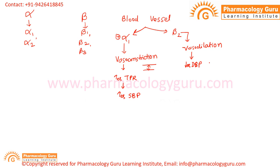So the overall effect in the blood vessel: we have two receptors — alpha 1 and beta 2. When the alpha 1 receptor is activated, it causes vasoconstriction, blood vessels become narrowed, increasing total peripheral resistance and systolic blood pressure. While when beta 2 receptors are activated, it causes vasodilation, which decreases diastolic blood pressure.